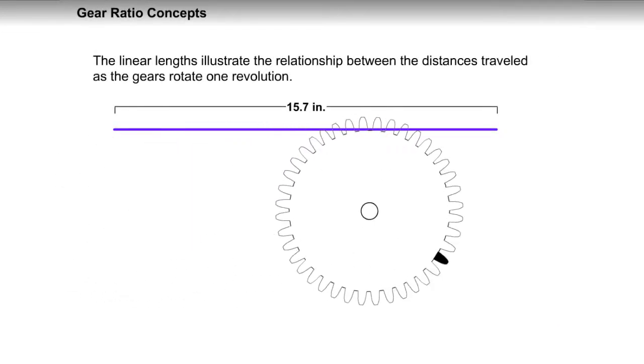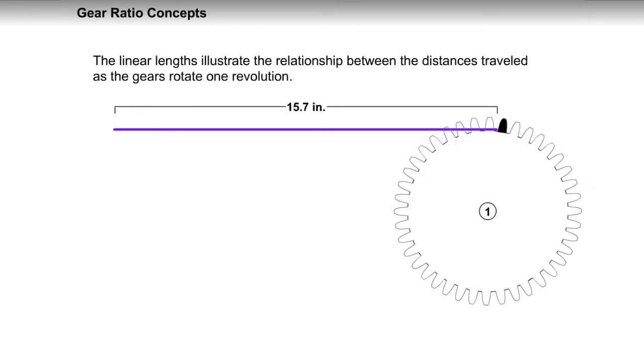The linear lengths illustrate the relationship between the distances traveled as the gears rotate one revolution.